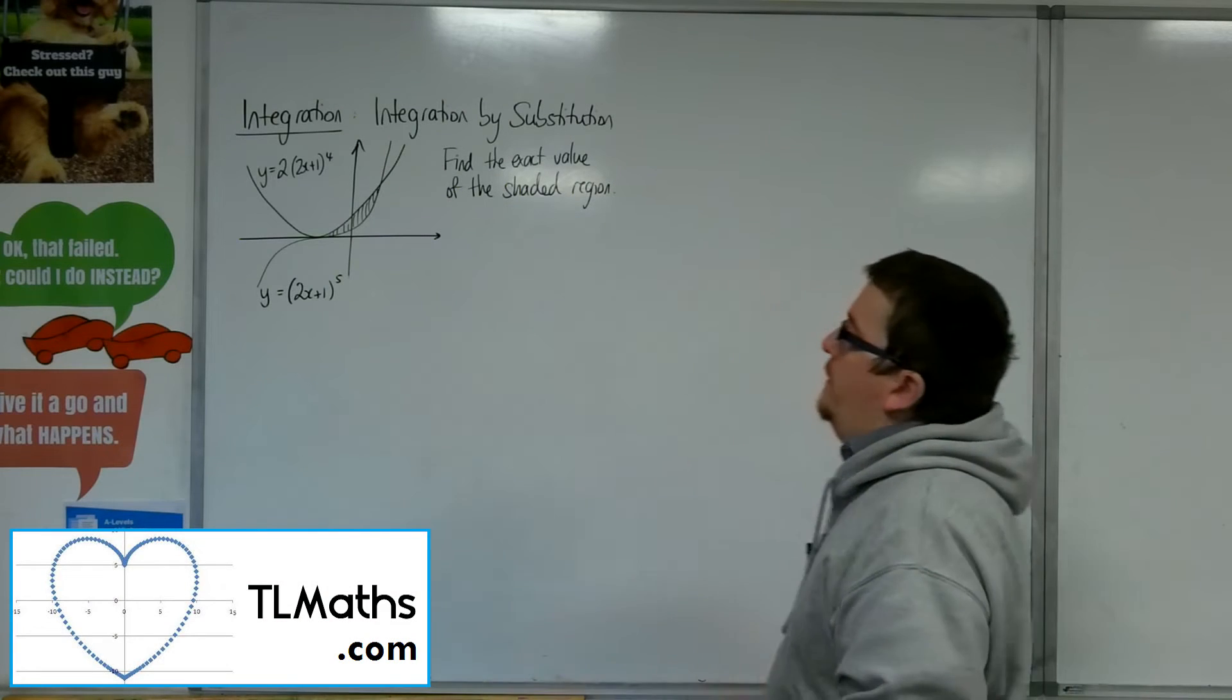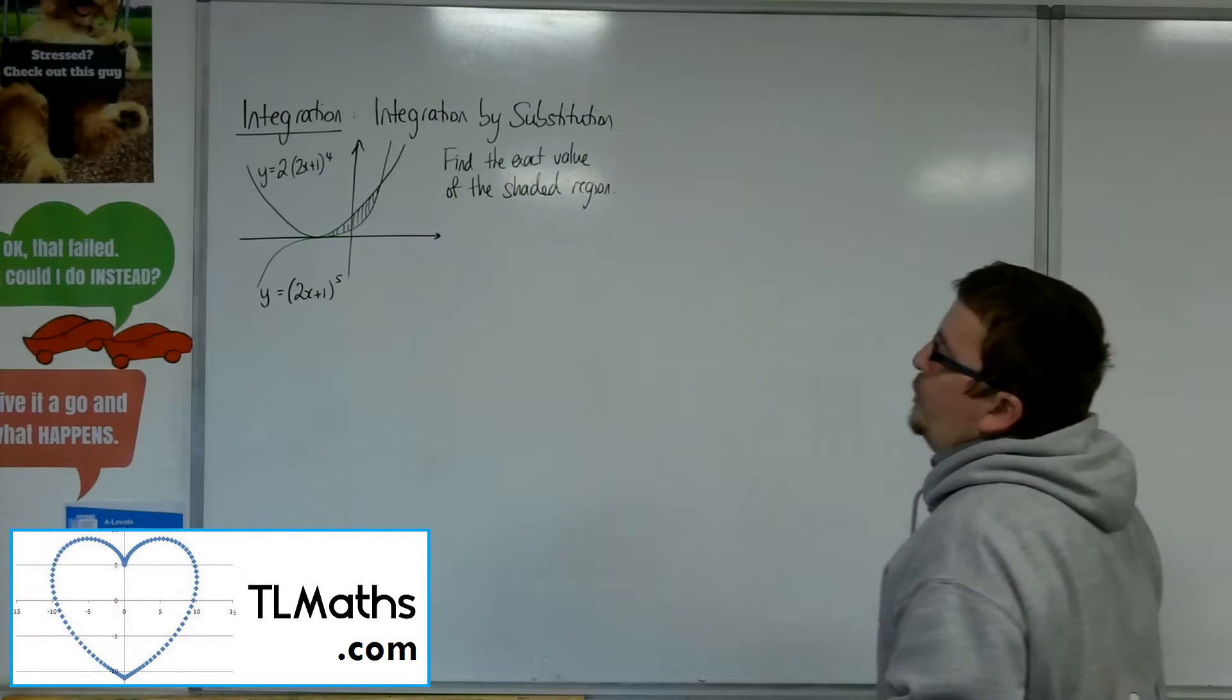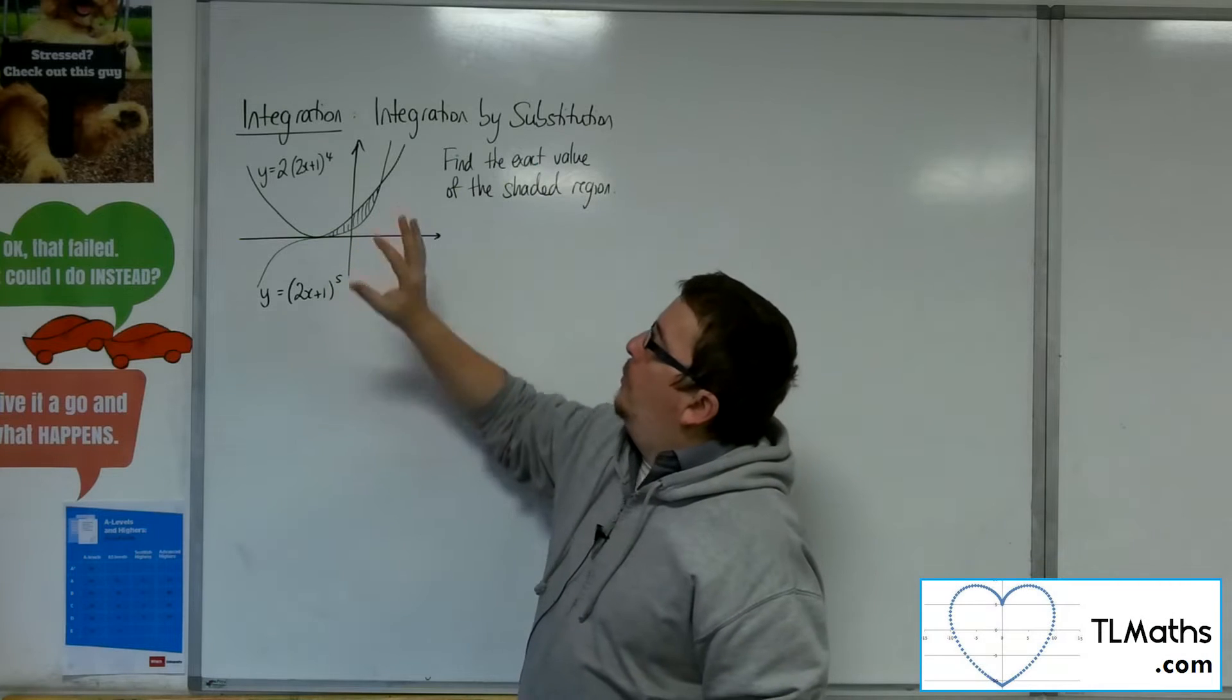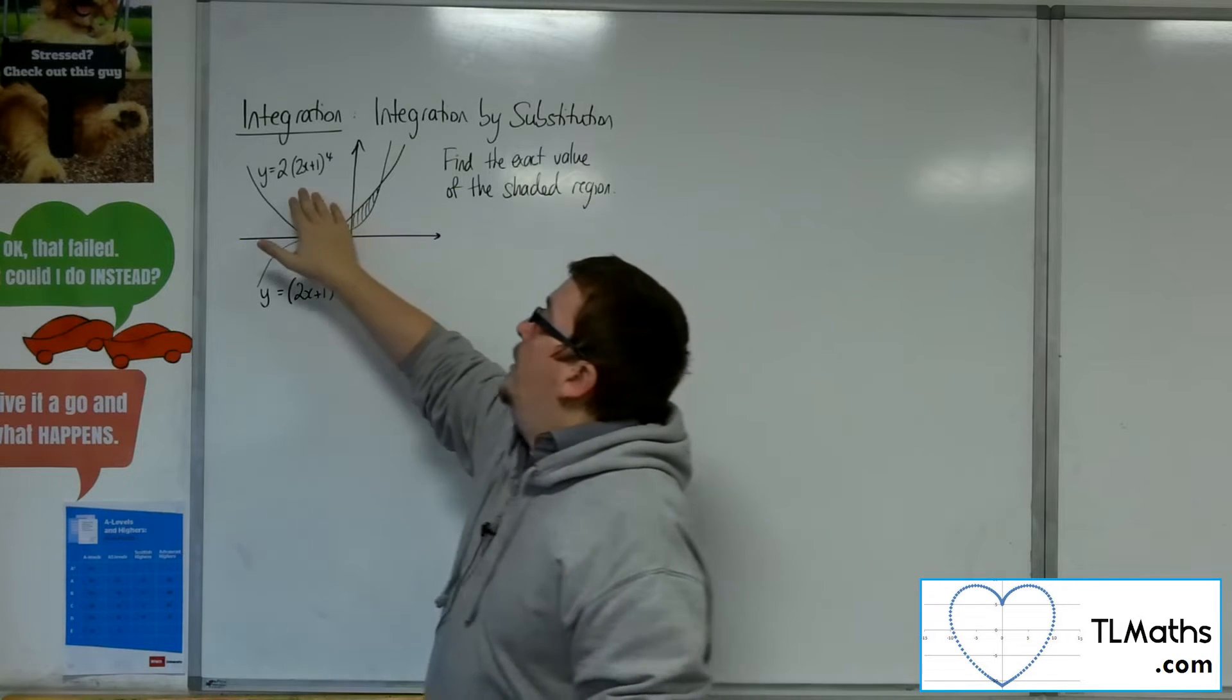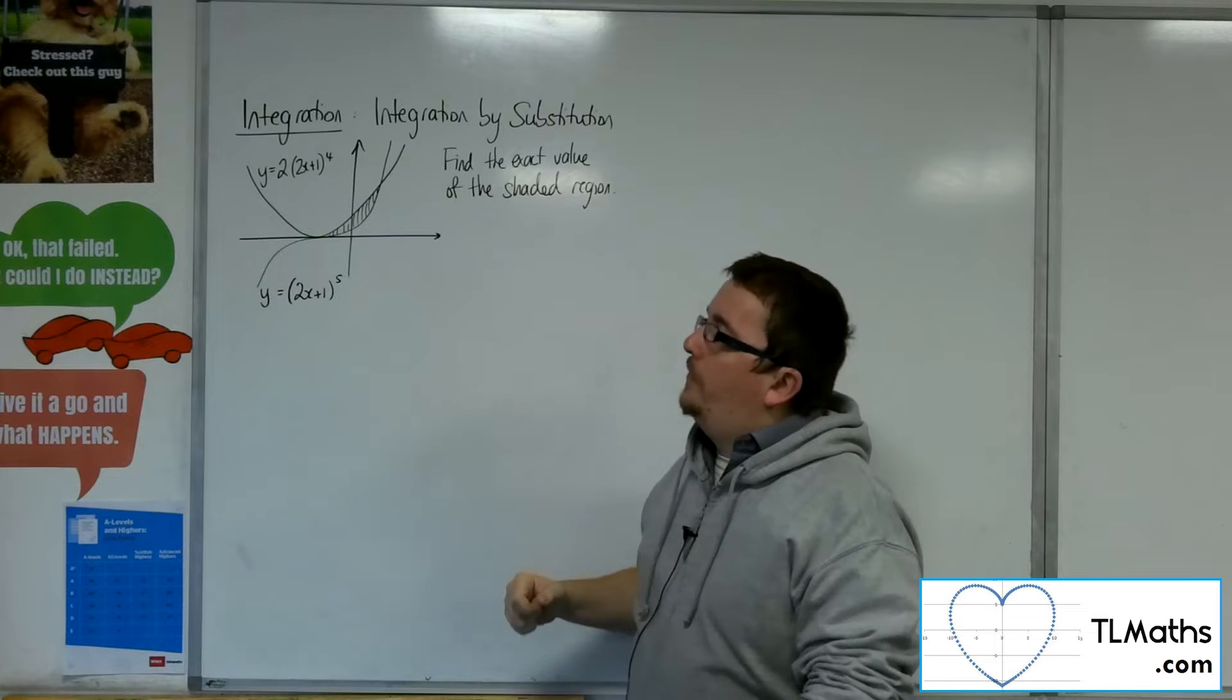In this video, we're going to try and find the exact value of the shaded region between these two curves. We've got y equals 2x plus 1 to the 5, and y equals 2 lots of 2x plus 1 to the 4.